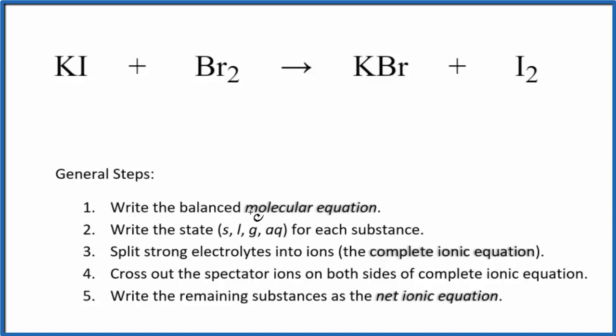The first thing we need to do is balance the molecular equation. I have one bromine here and two here. Let's put a coefficient of 2 here. Now I've got two bromines on both sides, but I have two potassiums. If we put a 2 here, that'll fix the potassiums. We have two iodine atoms, two here. We're done. So the molecular equation is balanced.